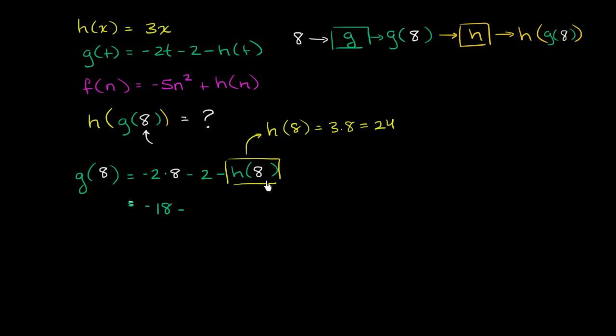So this value right over here is 24. We are subtracting it, so we have minus 24. Negative 18 minus 24 is what? That's negative 42. So all of this business is going to be equal to negative 42. So we figured out what g of 8 is. It is negative 42. So this right over here is negative 42.